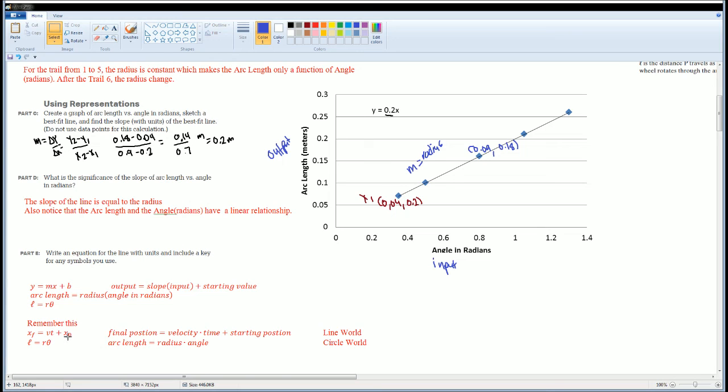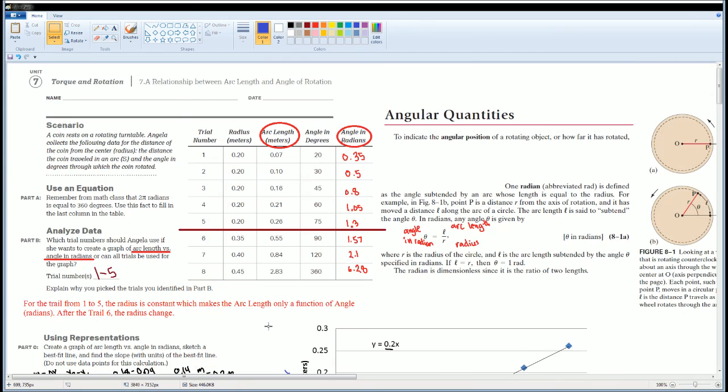In the circle world, it behaves the same exact way. The final position is the same thing as the arc length. Your velocity is the same thing as the radius because that is the change, and your time is your angle. Technically there should be a starting arc length here, but we're going to assume the starting arc is zero. This is a neat way of looking at it, and hopefully you get a better understanding of how angles, the radius, and the arc length are connected. It should be reminding you of linear equations. There you go - those are all your solutions for 7.A.